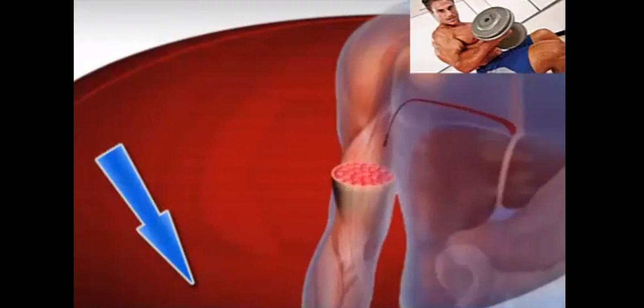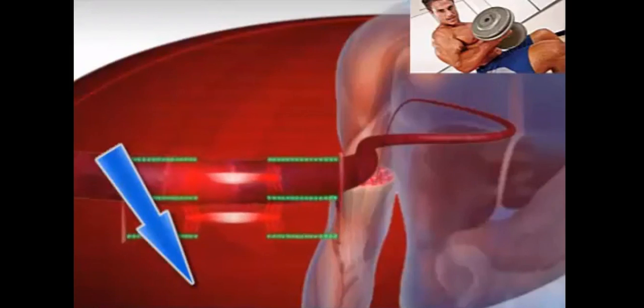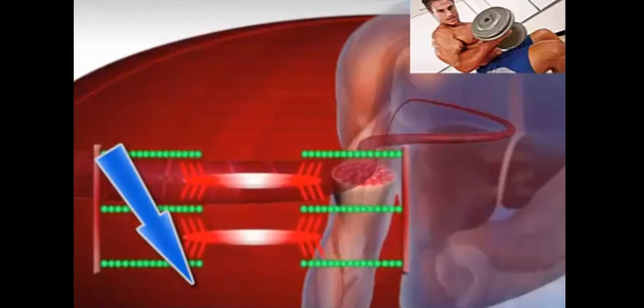Muscle fibers are comprised of many short segments called sarcomeres. Each sarcomere contains contractile proteins called actin and myosin.